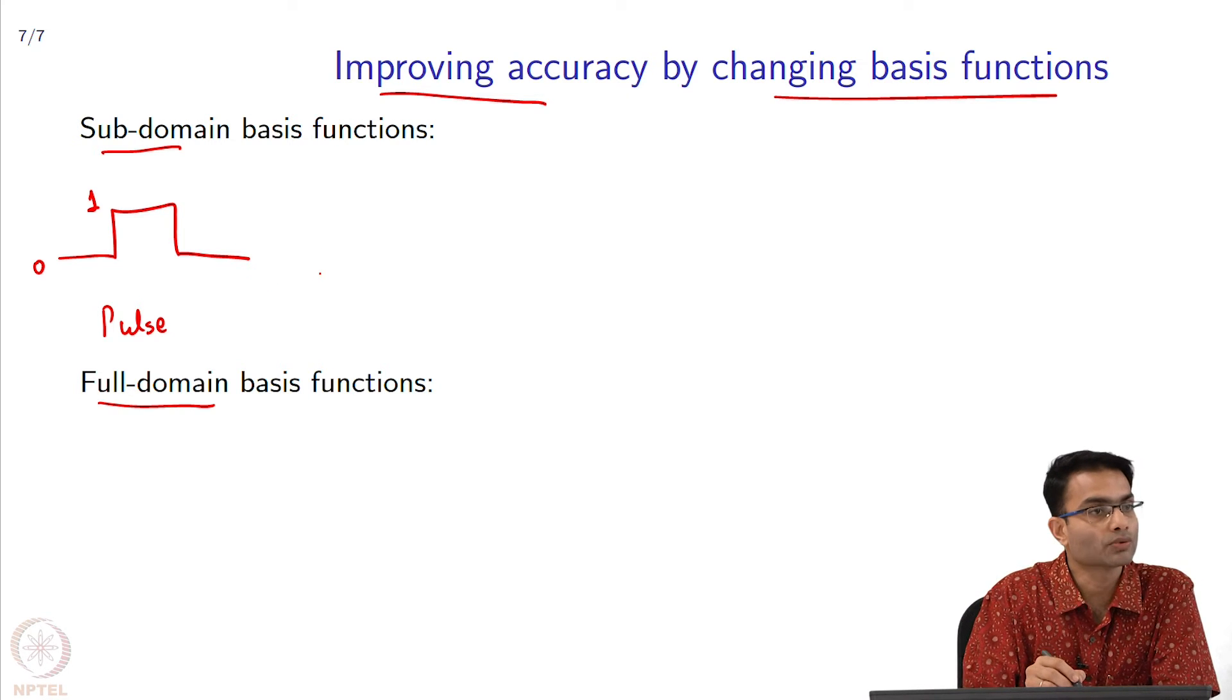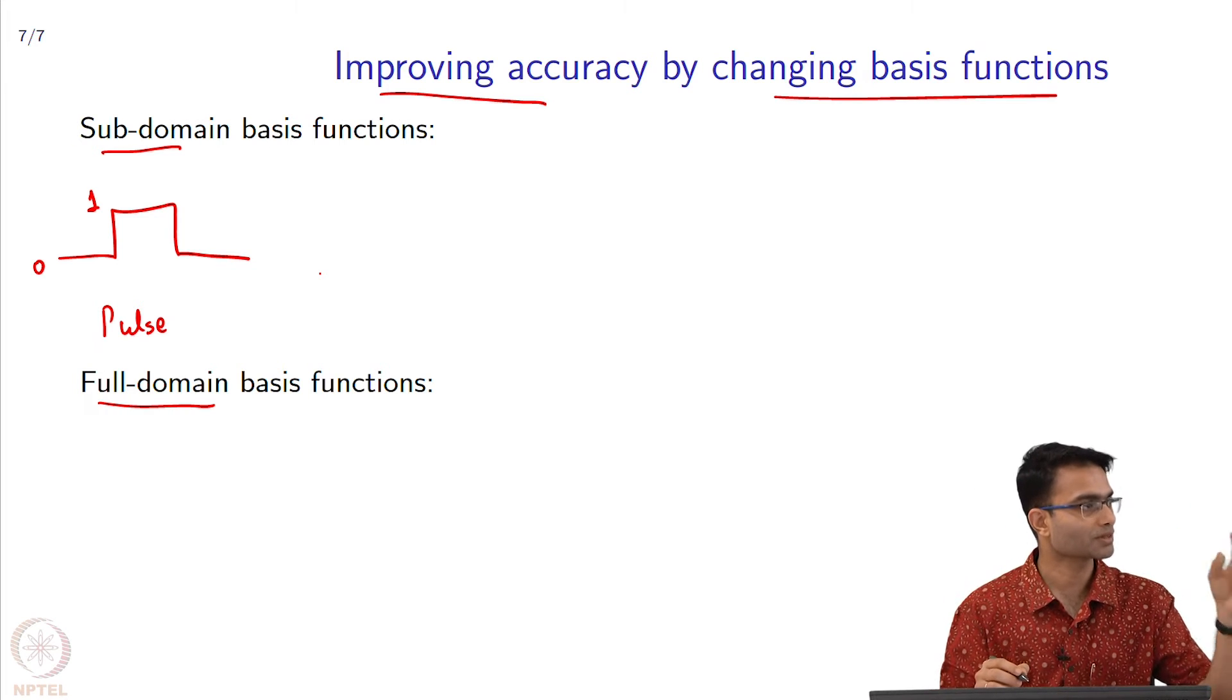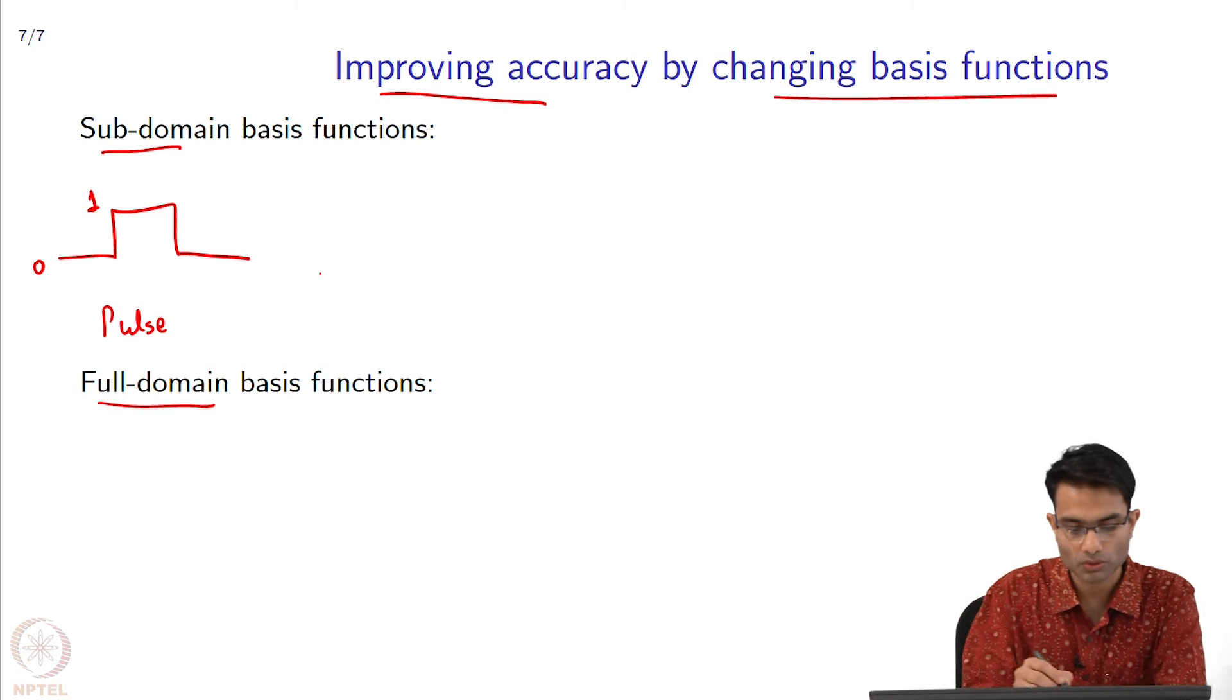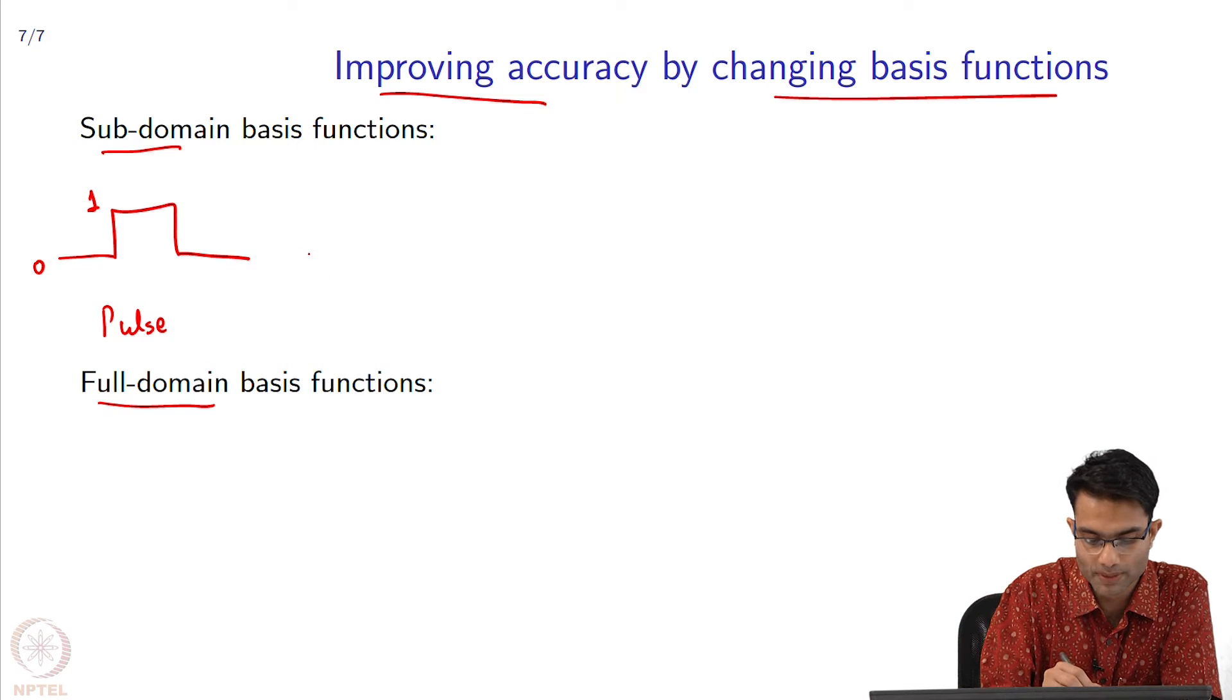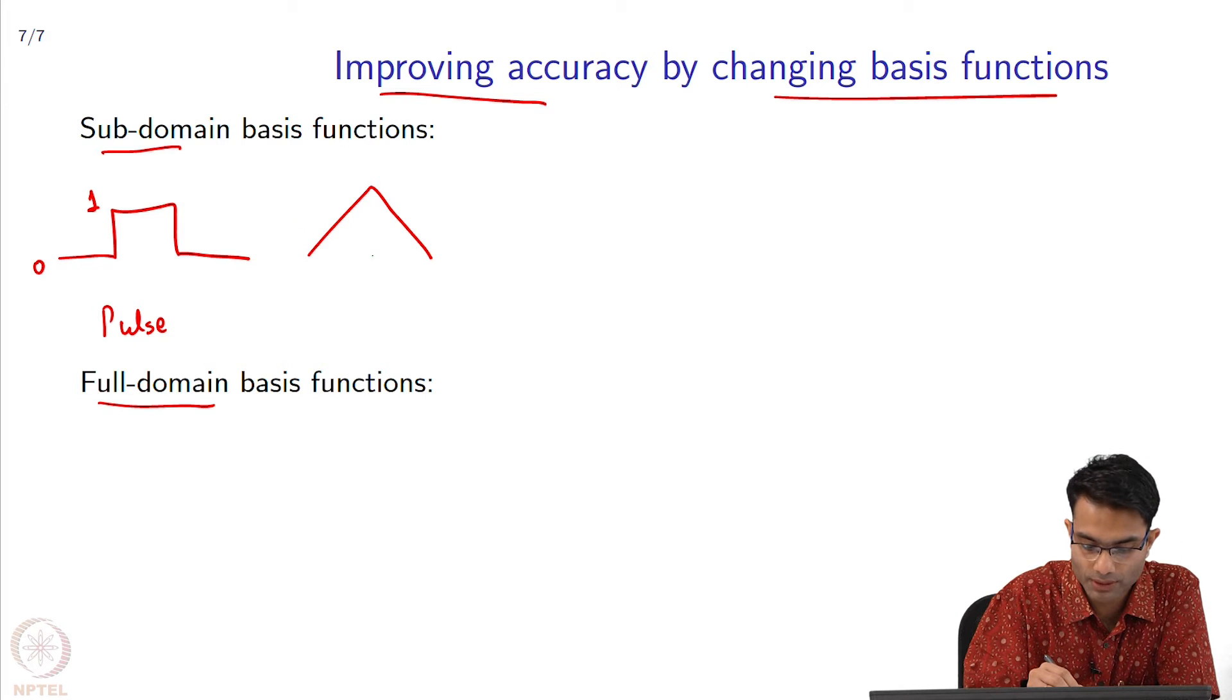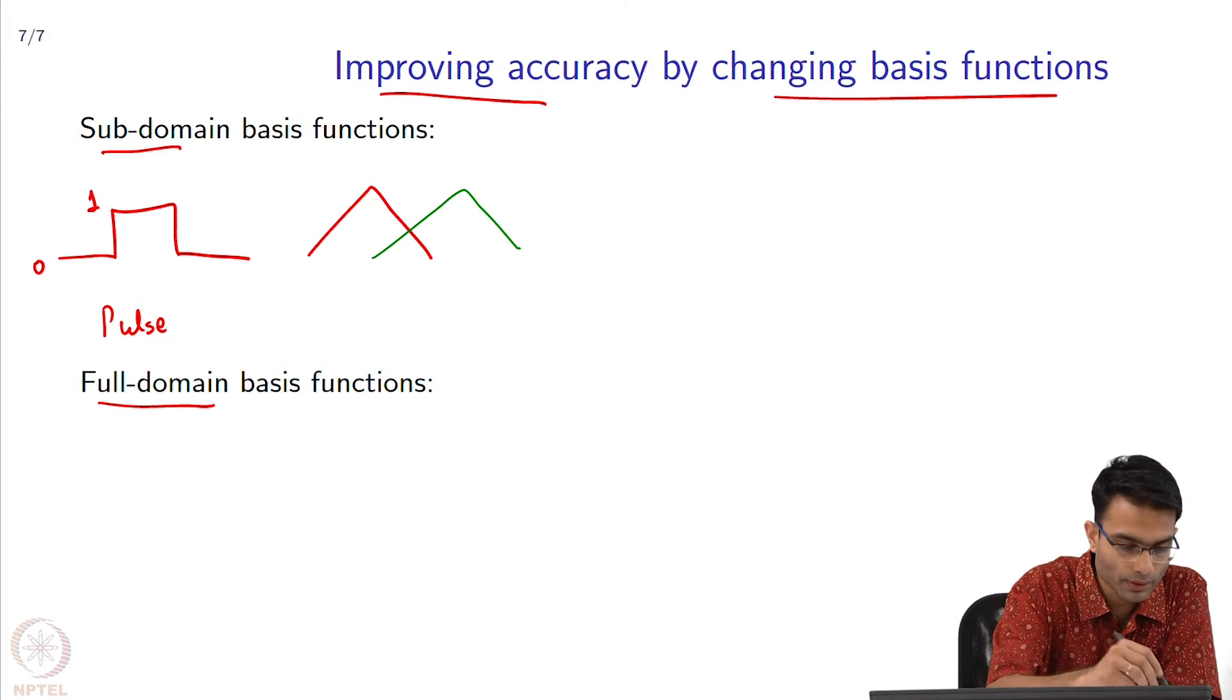Instead of a pulse, you can also do better. This is like a Taylor series—this is the first term of the Taylor series, constant; the next would be linear. You can have these triangular basis functions. For example, this is one basis function, the other basis function can be something like this, and so on.